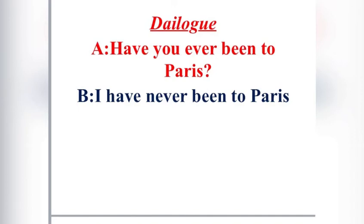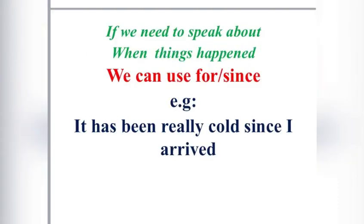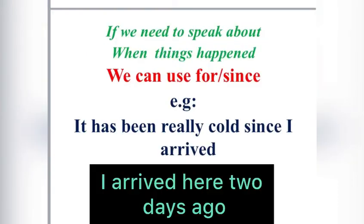Dialogue. A: 'Have you ever been to Paris?' B: 'I have never been to Paris.' If we need to say when things happen, we use since or for. Example: 'It has been really cold since I arrived.'